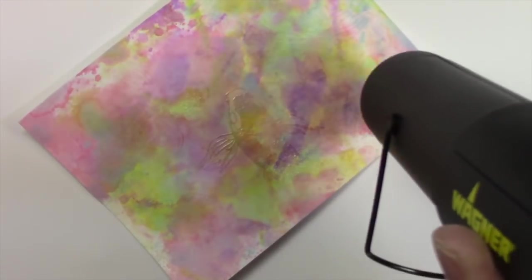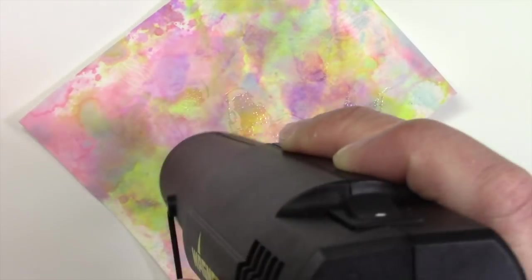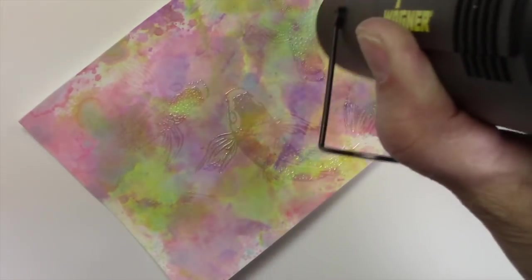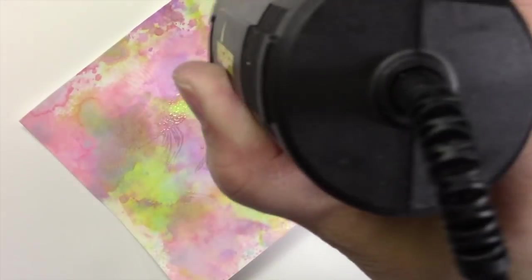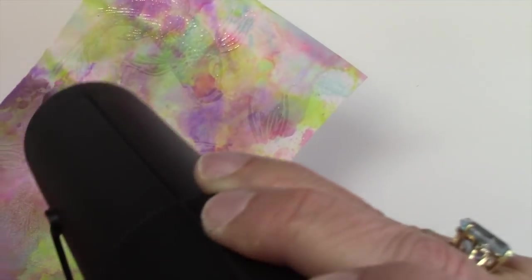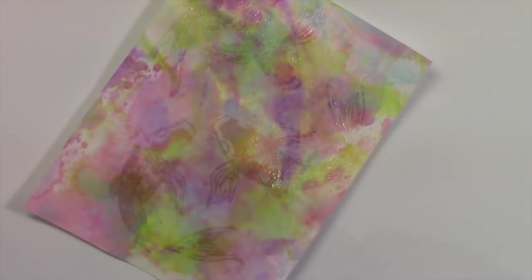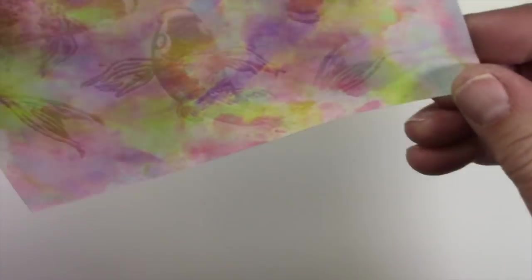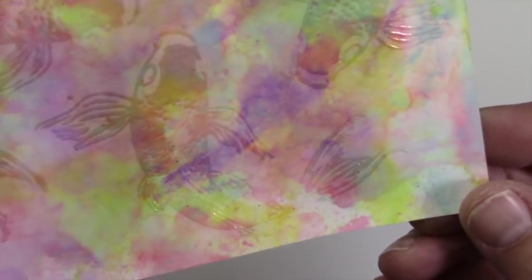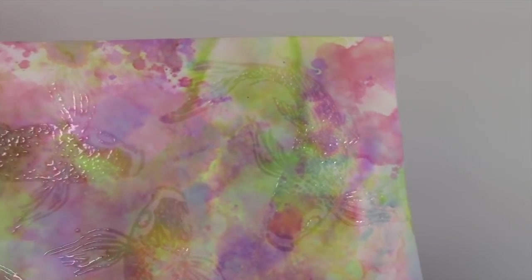Get your heat tool good and hot before you bring it to the paper. It helps with warping and you can't overheat embossing powder and it'll start to sink back into the paper, which I had happened to me there up on the left. You can kind of see it, but I cut that out.